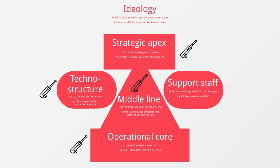Turning to the technostructure: for our cricket club example this would be quite small, because there aren't as many standardized procedures as there would be in, say, a manufacturing company with many products each having their own operating procedures. However, the cricket club would probably have a technical coach aiming to standardize training, and the stadium manager may also set standard procedures for ticket sales and food and drink production. It's worth noting that the stadium manager could appear in both the technostructure and the middle line — in larger organizations there might be a dedicated role.